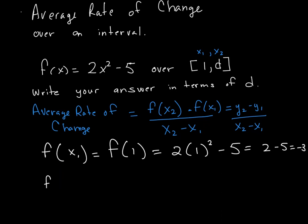Now I have f of x2, which is the same thing as saying f of d, because my x2 value is equal to d. And when I plug that in, I get 2 times d squared minus 5.